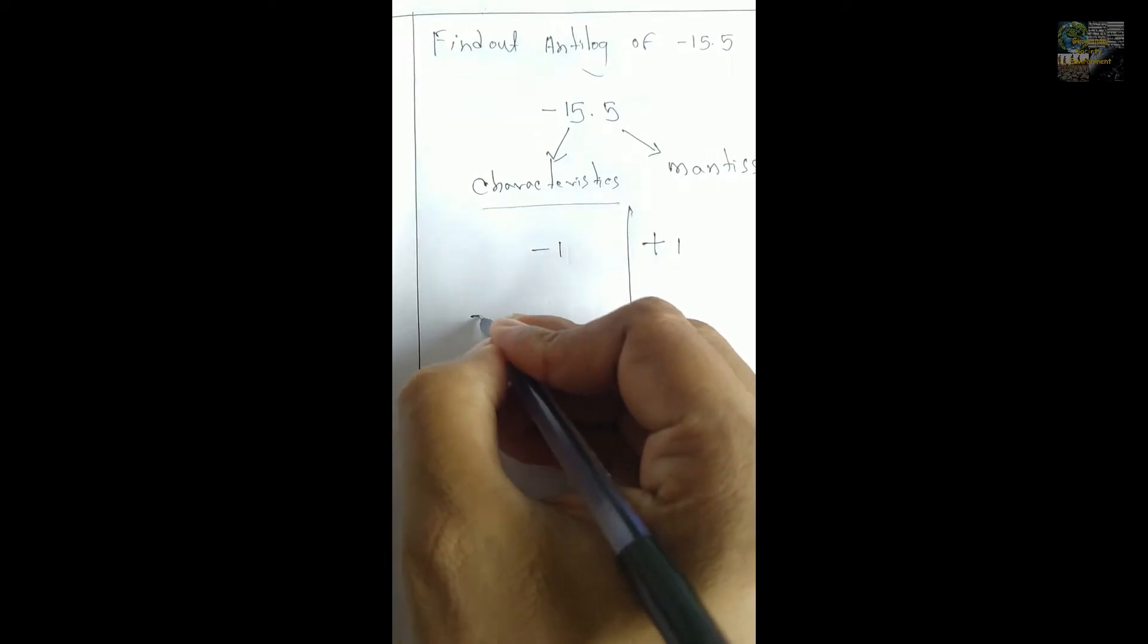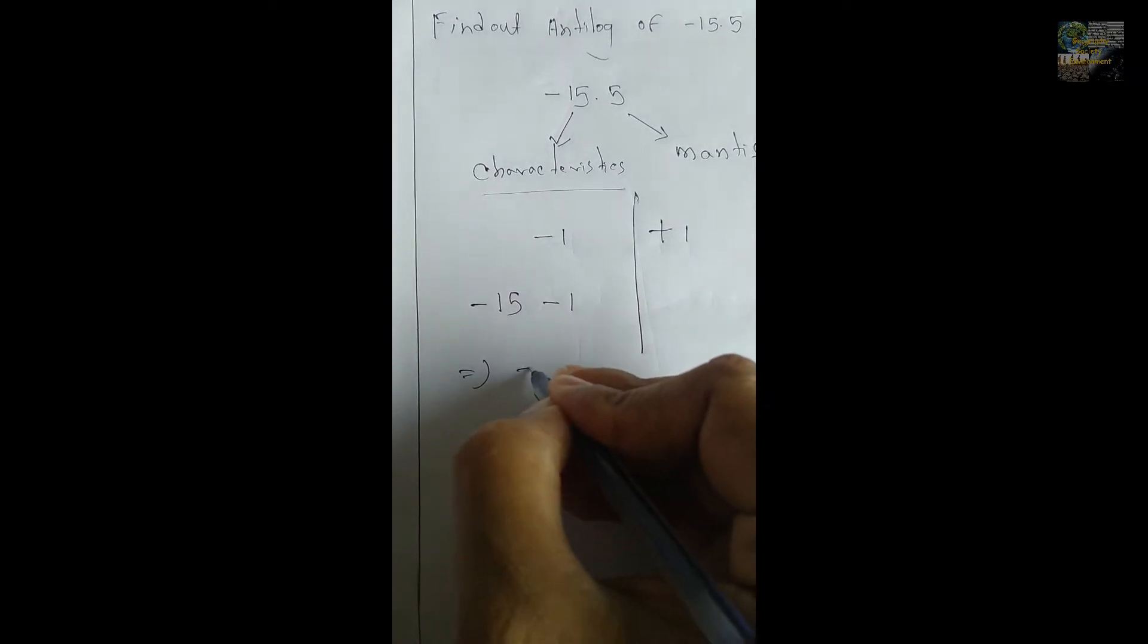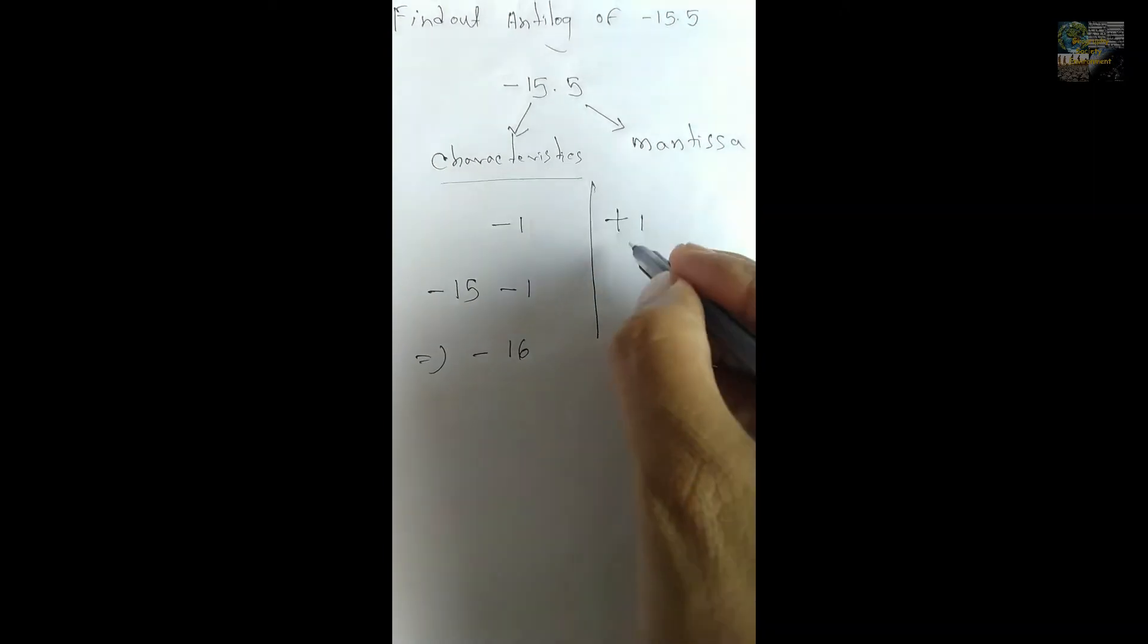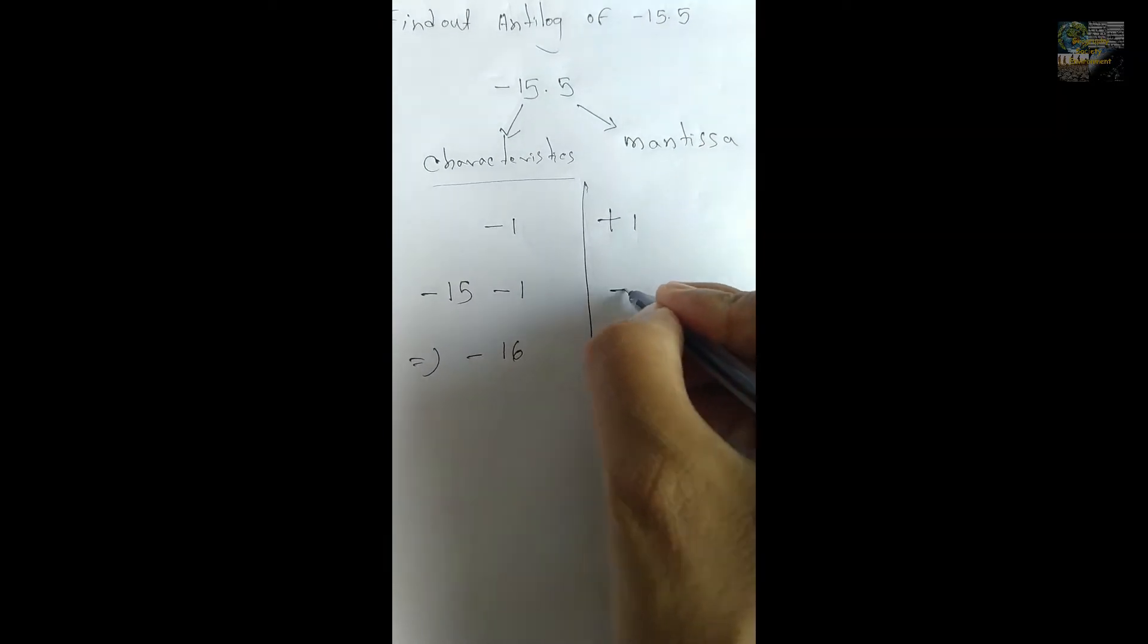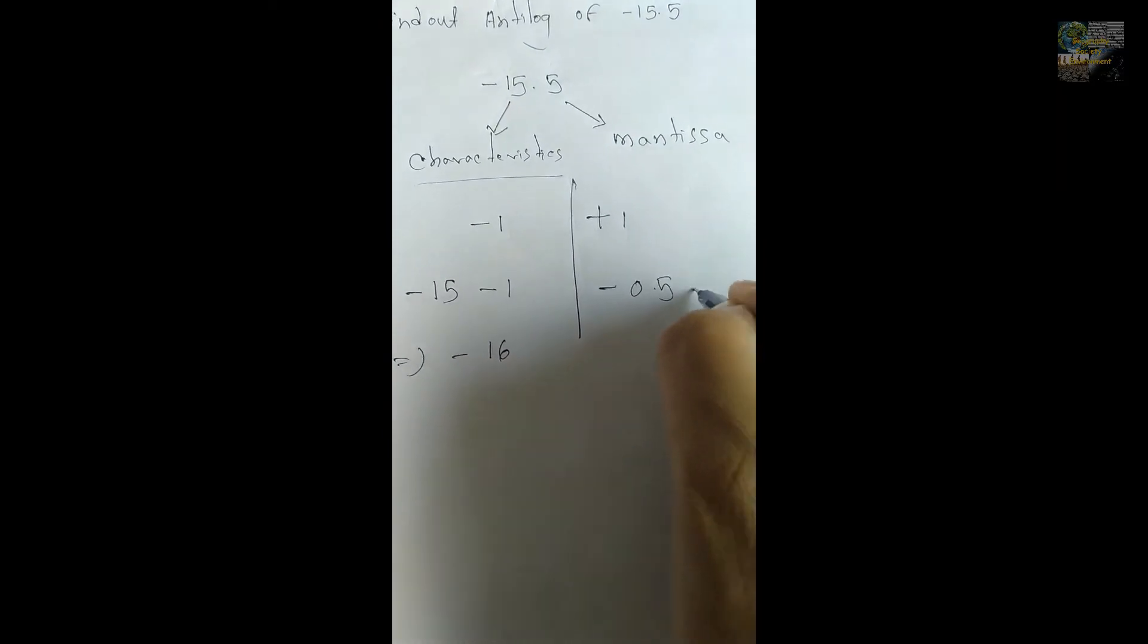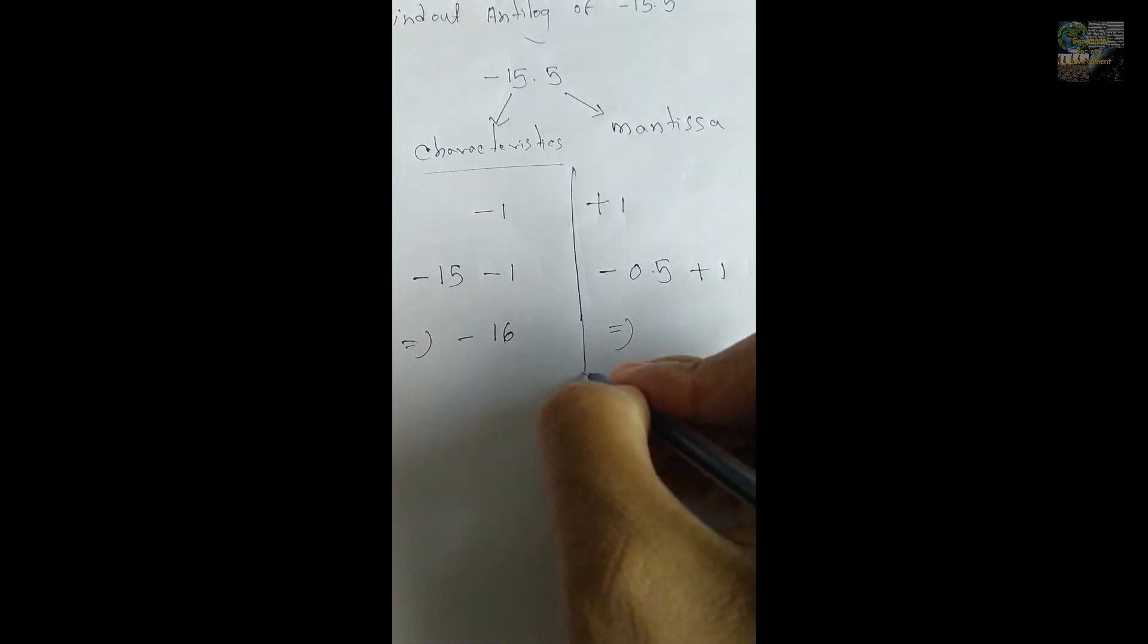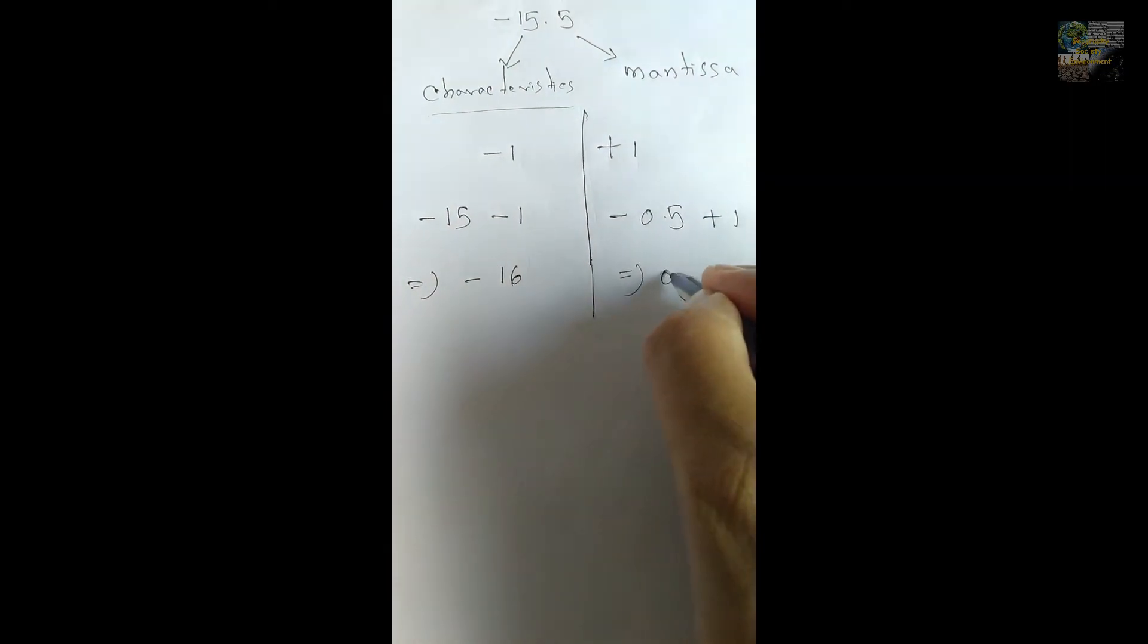Here, I had the characteristics minus 15 minus one. The result will be minus 16. On the right hand side, in case of mantissa, the value is minus 0.5 plus one, and the value will be 0.5.